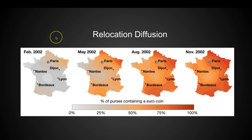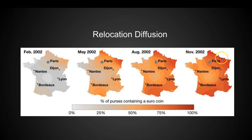Looking at relocation diffusion with euro coins — this shows the number of purses carrying euro coins in February 2002: not very many. But as we move across the years, because people are moving and visiting and transplanting their coins, we can see that there are now so many euro coins in Paris, in France. This is occurring because of relocation diffusion.